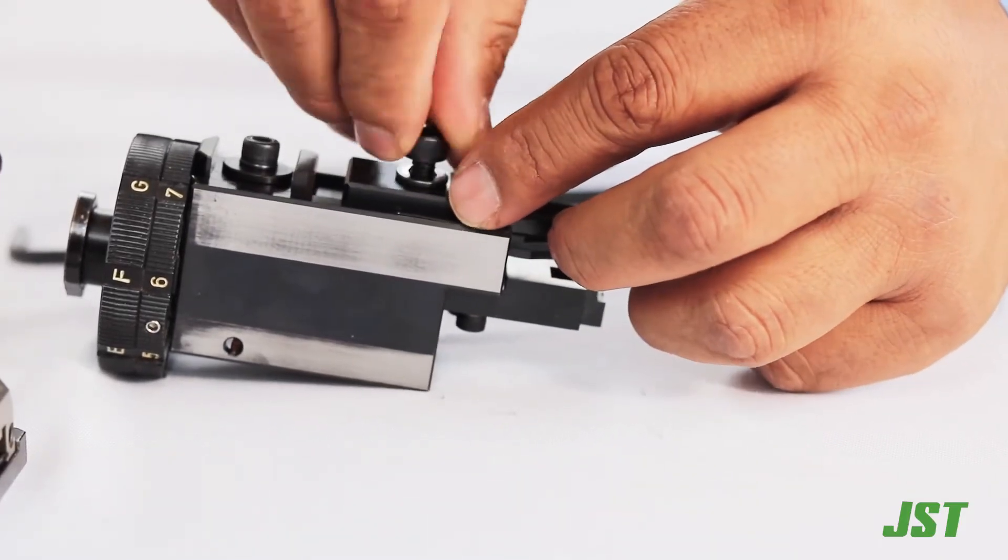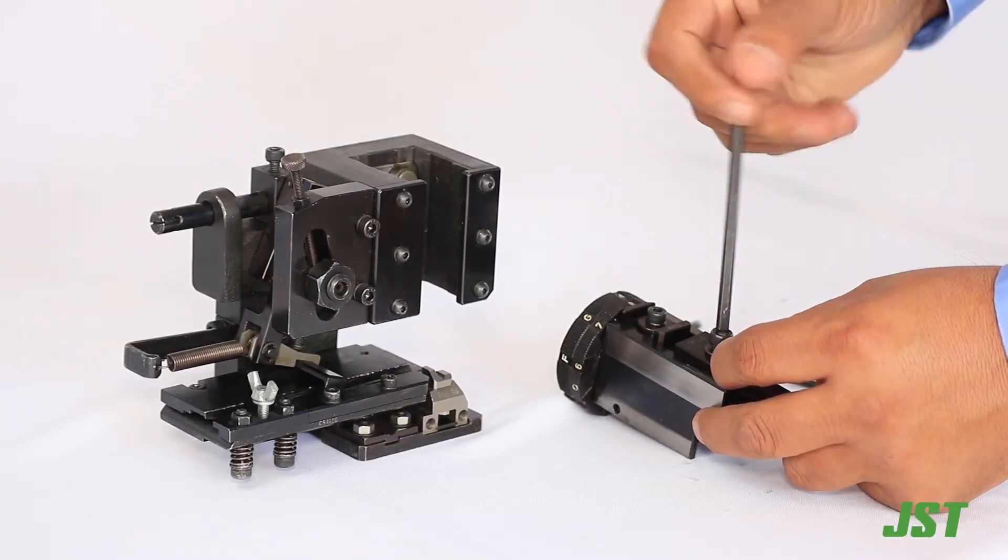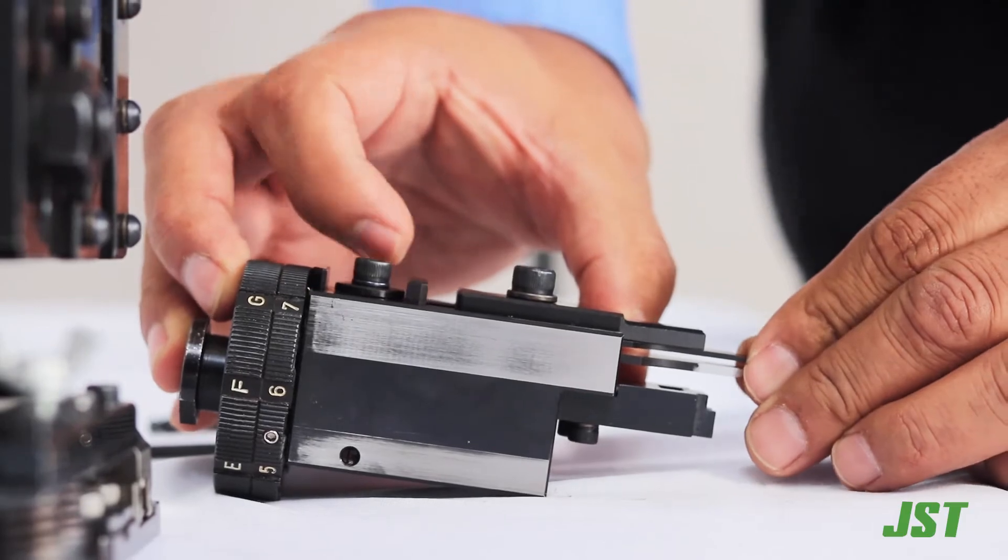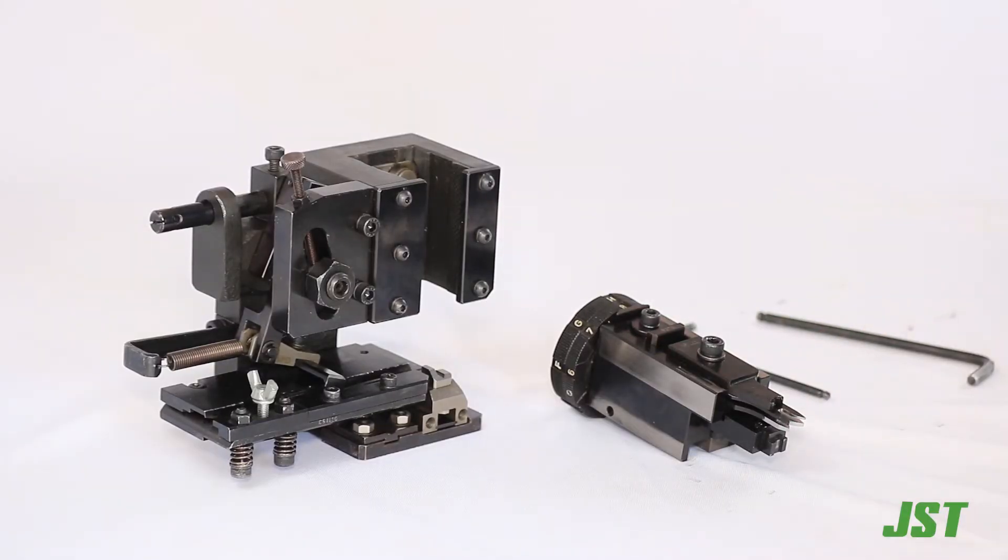Retighten the 5 mm screw with the socket head. Check that the crimpers move freely up and down. If they do not move freely, it is necessary to repeat the assembly and sequence.